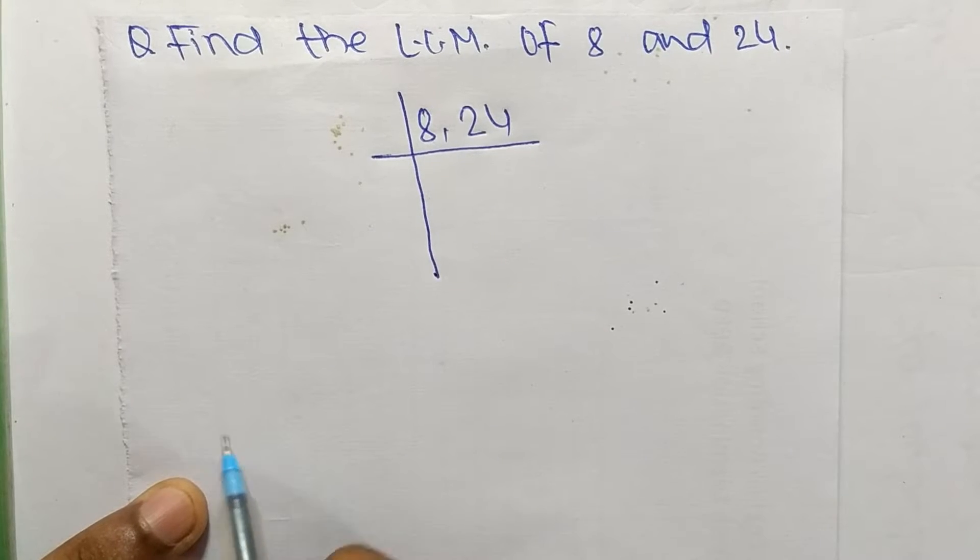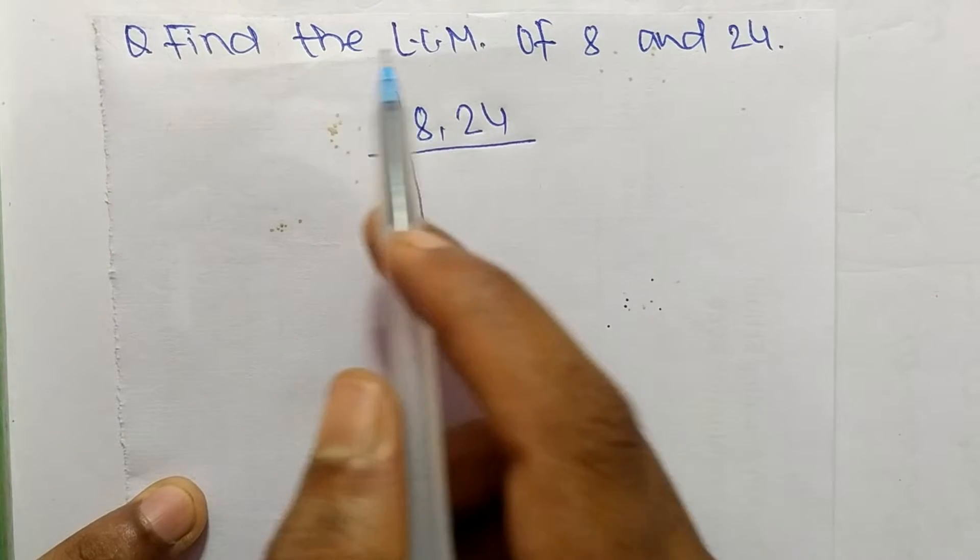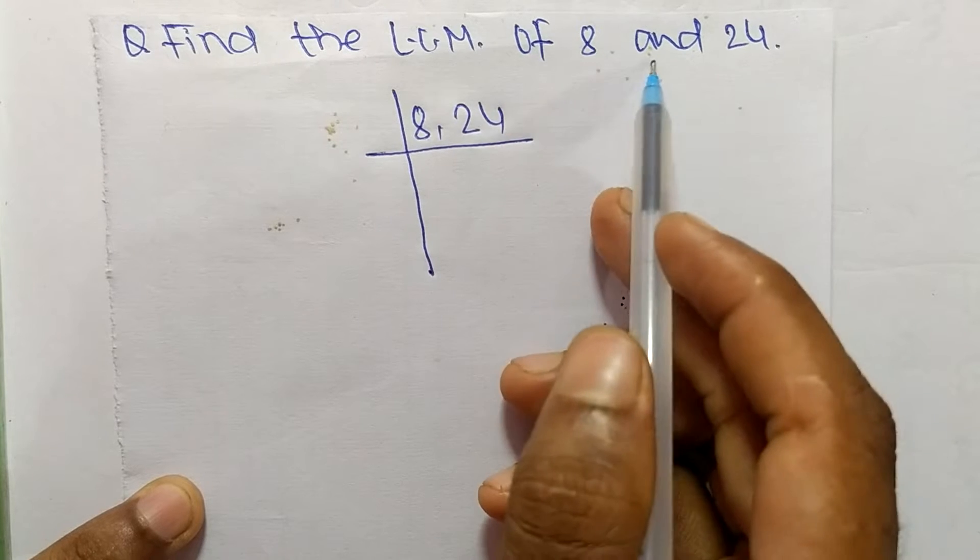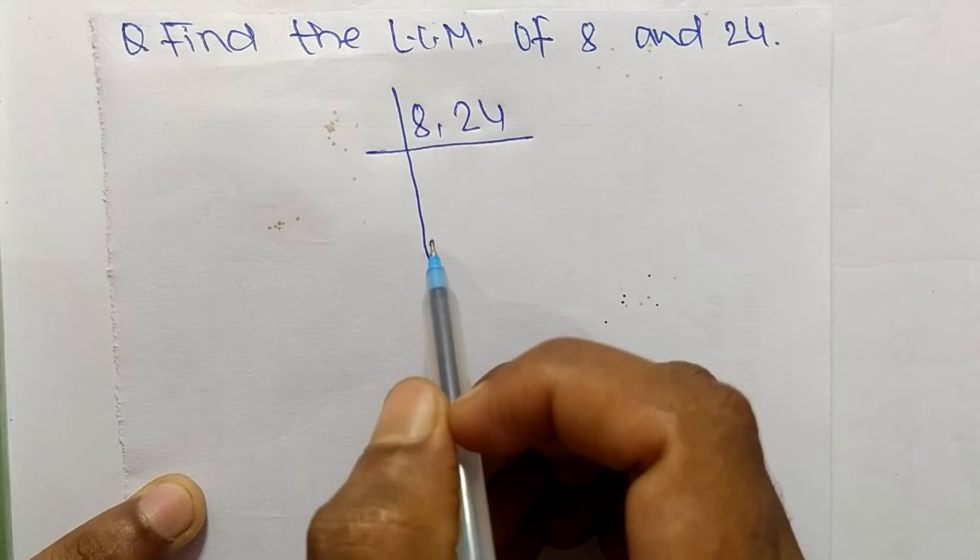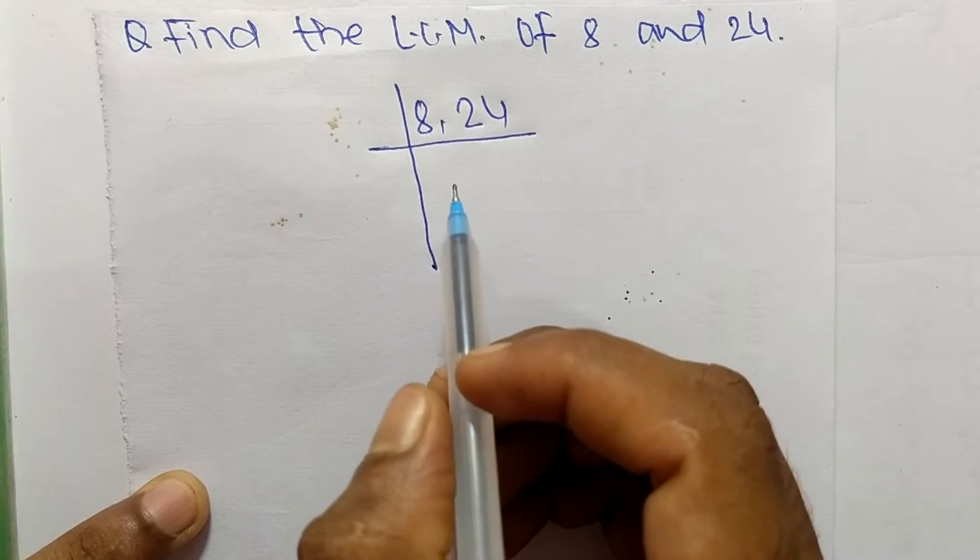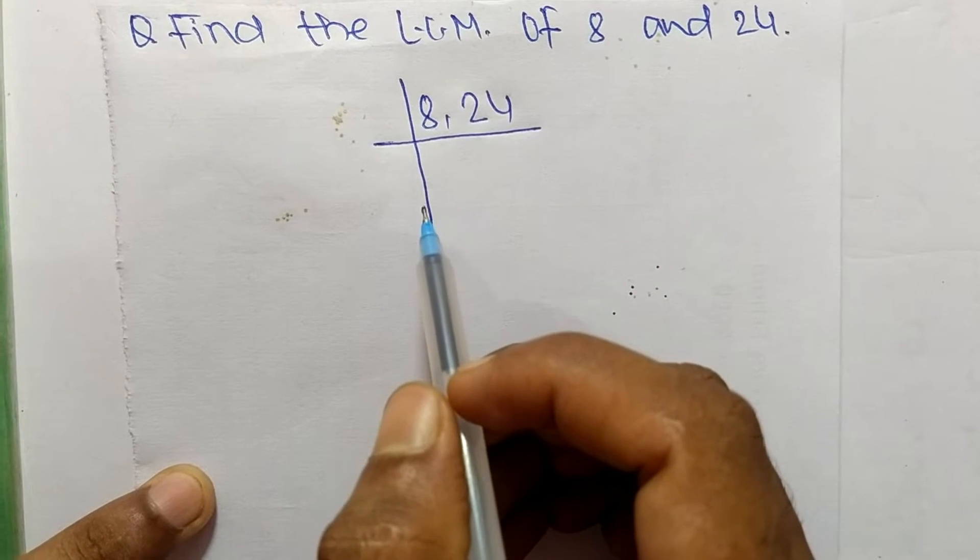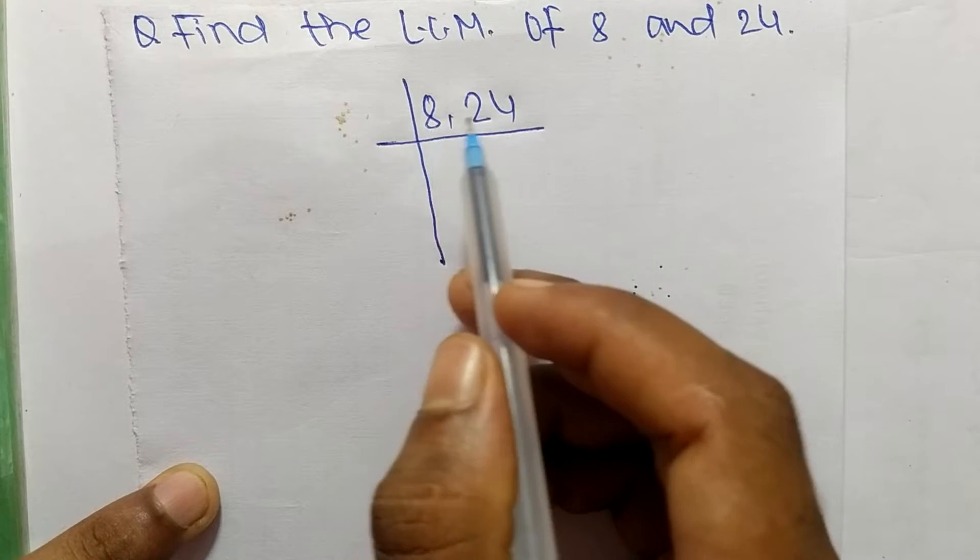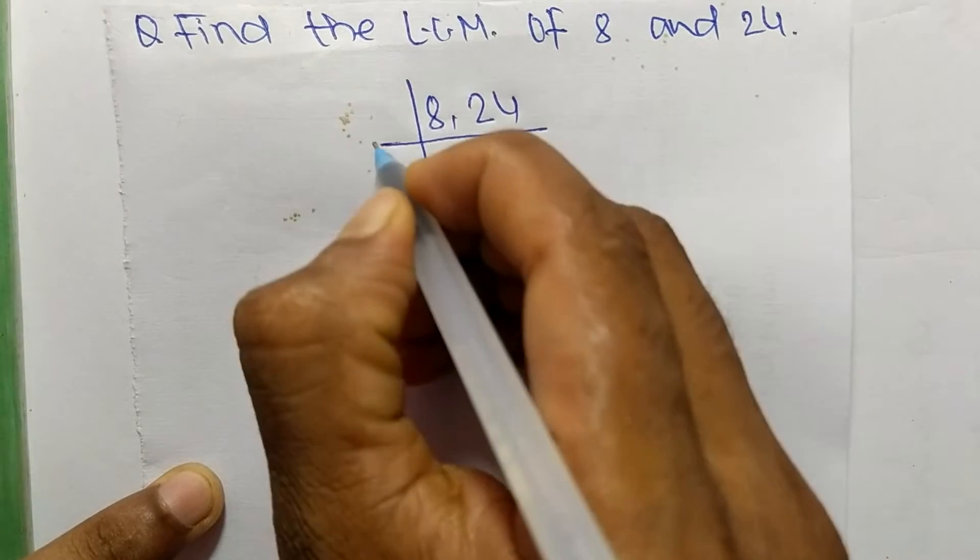Today in this video we shall learn to find the LCM of 8 and 24. To find LCM, first we have to choose the lowest number which can exactly divide 8 and 24. The number is 2.